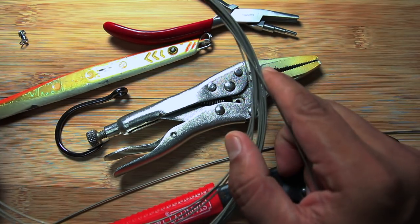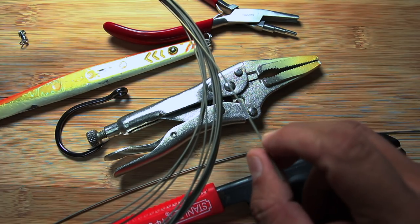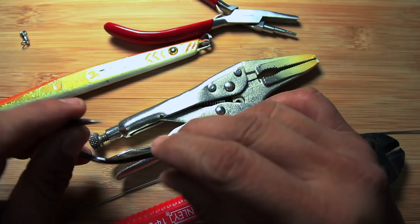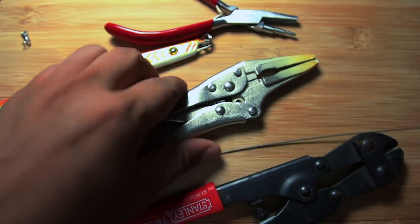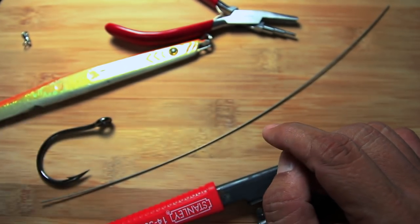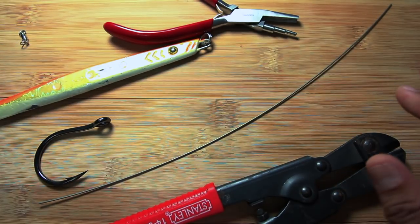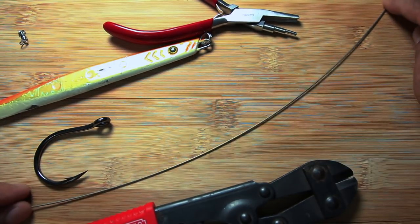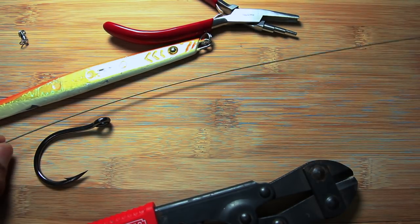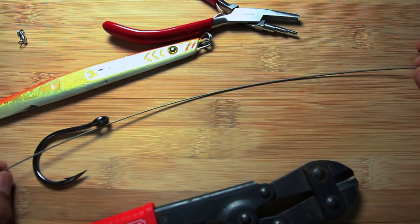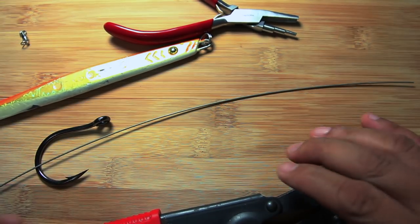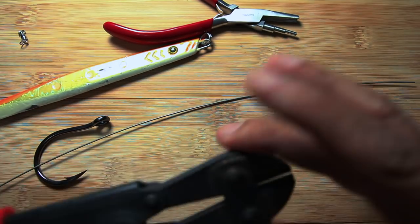So materials we have - this is 400 pound wire. This is a nine odd VMC jigging hook. I use a vice grip for this and I'll show you how I do it later. Bolt cutters to cut the wires. As you can see I have a length of wire here, this is about 15 inches, although we're gonna be just using a short piece of this. I like having really long tagging ends when I break the wire.